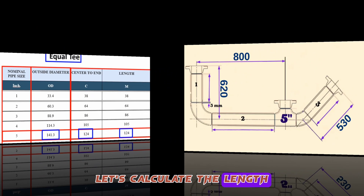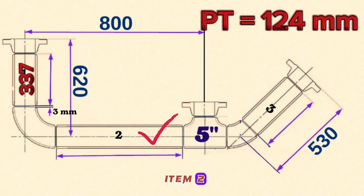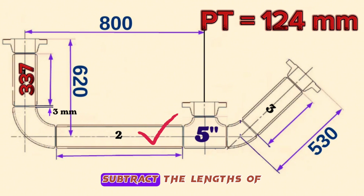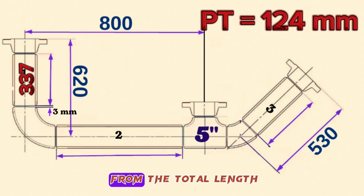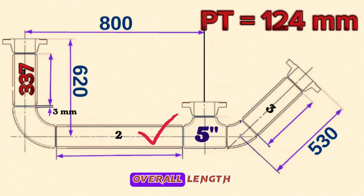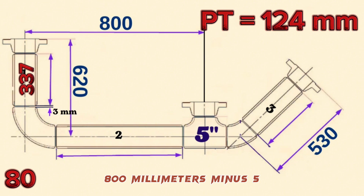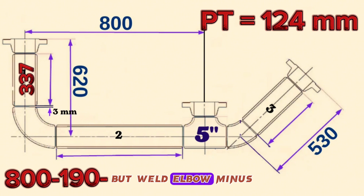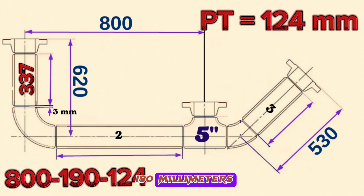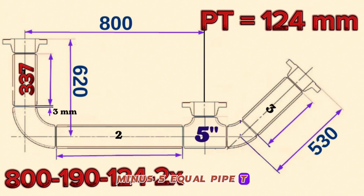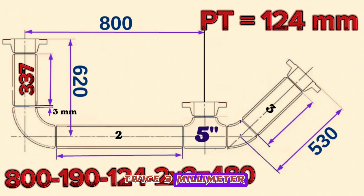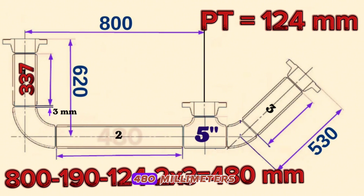Let's calculate the length of pipe piece Item 2. To find the length, subtract the lengths of the 90-degree elbow and the pipe tee from the total length. Overall length 800 mm, minus 5-inch 90-degree long radius butt weld elbow 190 mm, minus 5-inch equal pipe tee 124 mm, minus twice 3 mm clearance for welding, equals 490 millimeters.